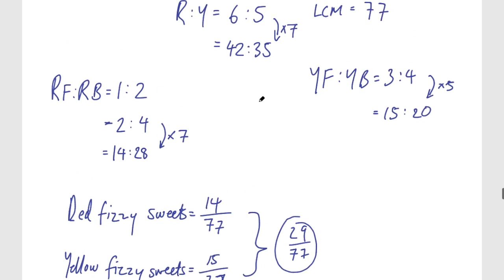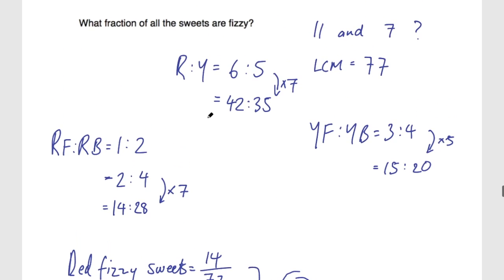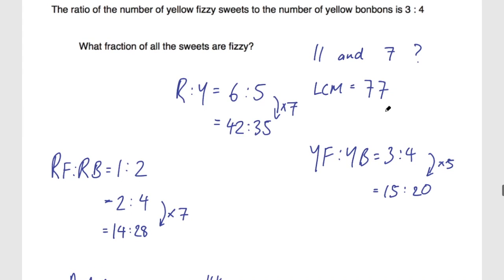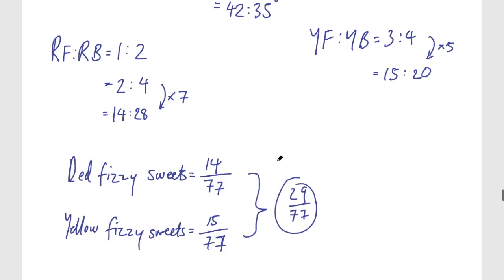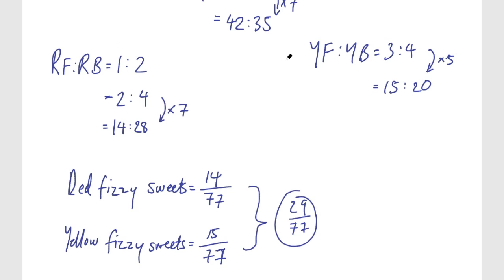So that's the second method, looking for the lowest common multiple of the original ratios. Let me know which method you prefer and which makes more sense to you. Leave a like if you appreciate this video, and I'll see you in the next one.